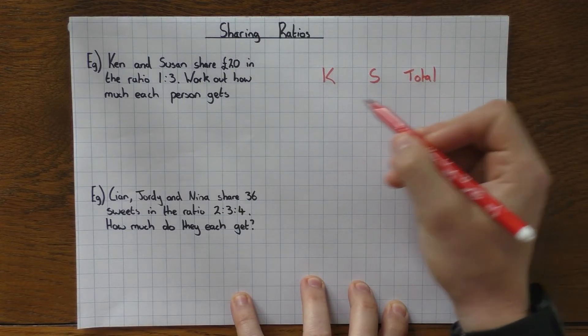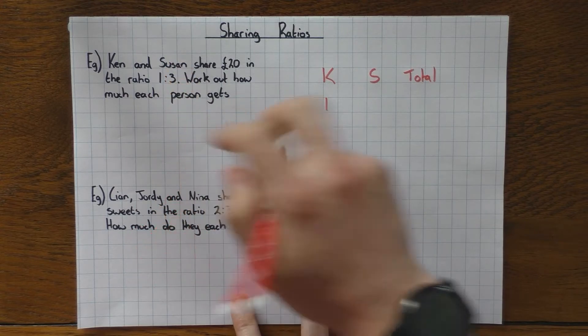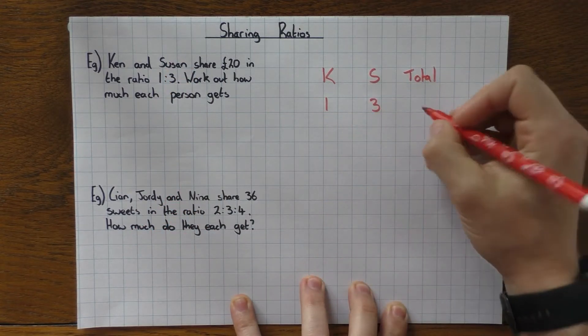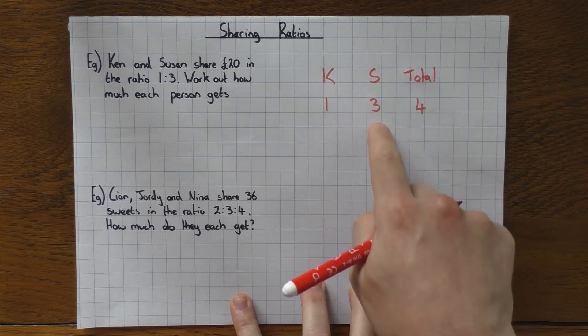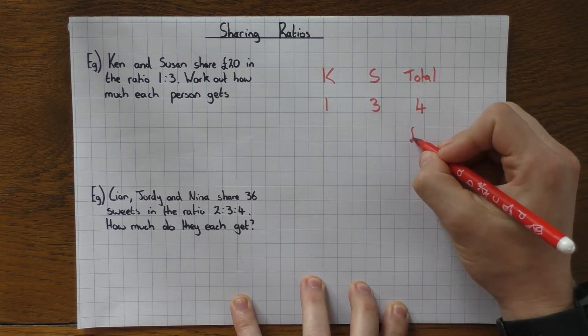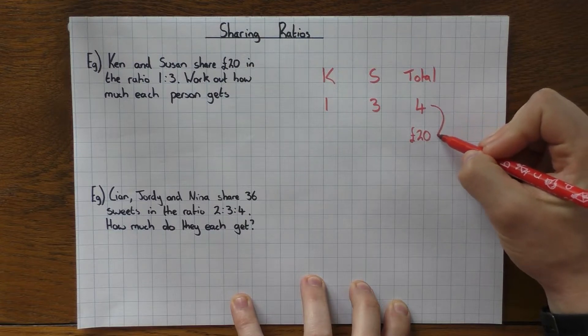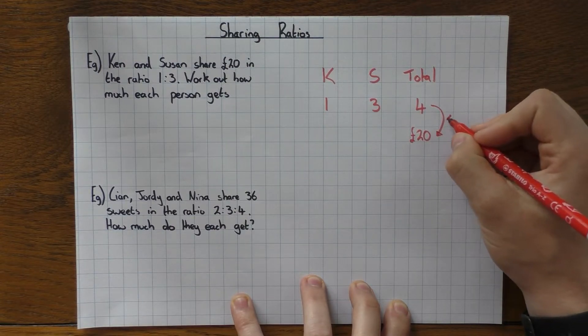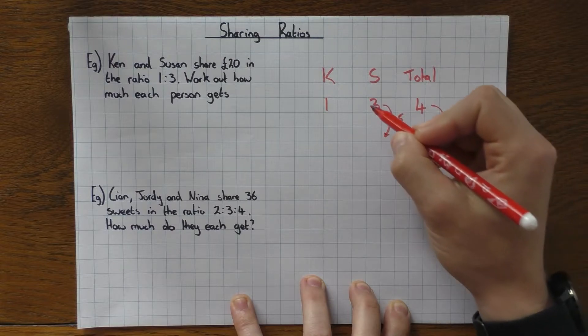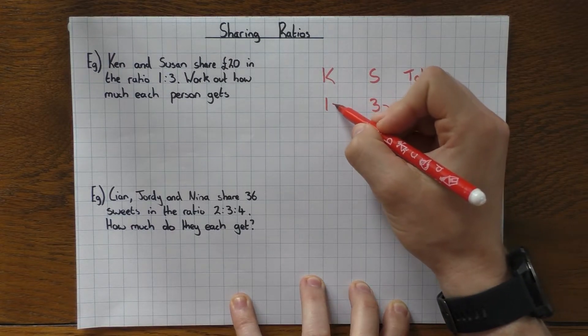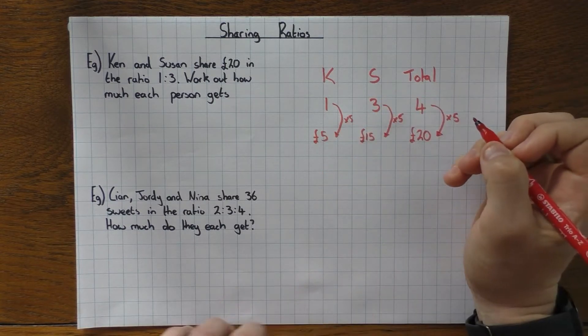All we do is write down the ratio, 1 to 3. So 1 to 3 means that Ken gets 1 and Susan gets the 3, so in total I have 4. They're sharing £20, so Ken doesn't get £20, Susan doesn't get £20—they are sharing, so the total is £20. All you do is ask yourself how do I go from 4 to 20? Well, I times it by 5. So if I'm timesing this by 5, you need to also times this one by 5, so 3 times 5 is 15, so that's £15. And times this one by 5, so 1 times 5 is £5.